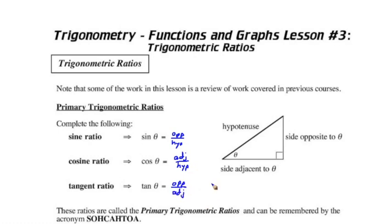These ratios are called the primary trigonometric ratios. We can remember them by the acronym SOHCAHTOA, with the O being opposite. So sine is opposite over hypotenuse, cosine is adjacent over hypotenuse, and tangent is opposite over adjacent.